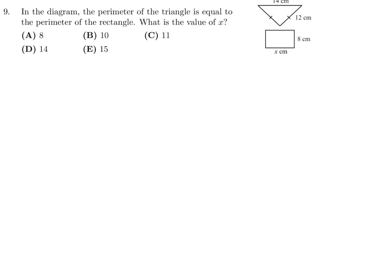In the diagram, the perimeter of the triangle is equal to the perimeter of the rectangle. What is the value of X? So the perimeter of this triangle is 14 plus 12 plus 12 because this symbol means that those two sides are the same.